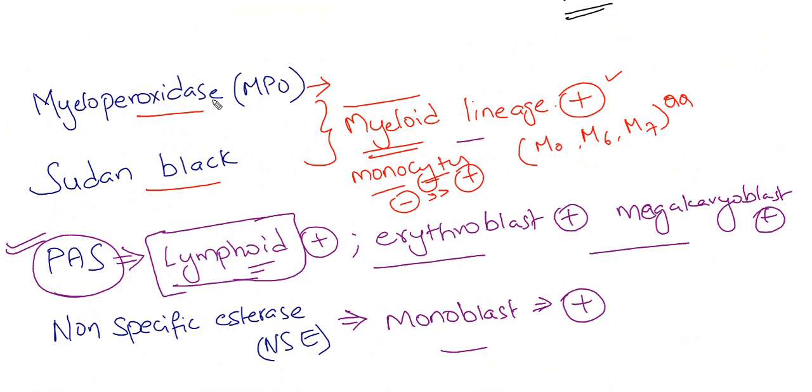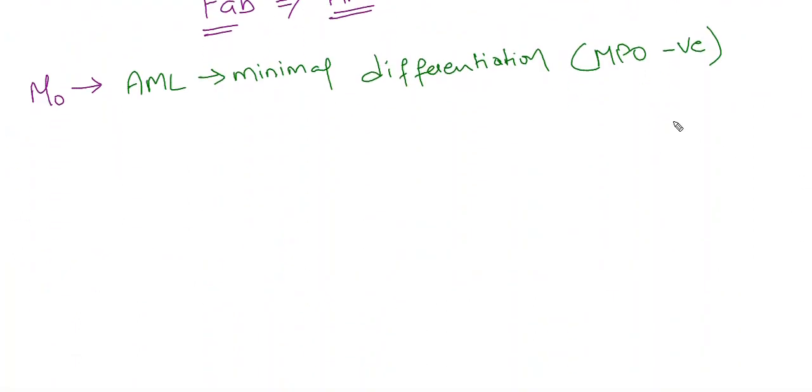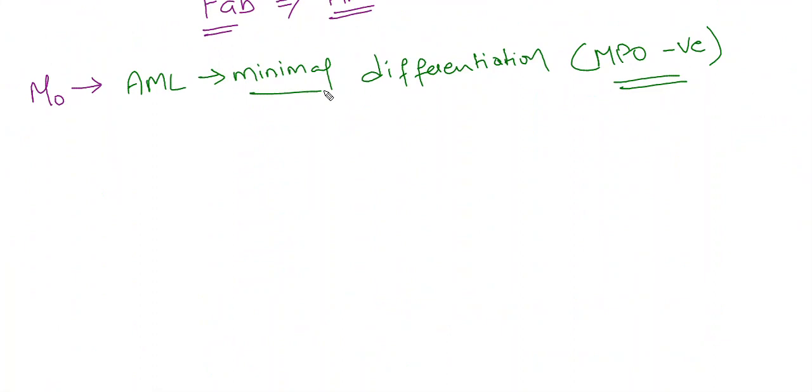Starting with M0, M0 is AML with minimal differentiation. As there is minimal differentiation, these are myeloperoxidase negative. I already said myeloid lineage will be positive for myeloperoxidase except M0, M6, and M7. This is MPO negative because of minimal differentiation.